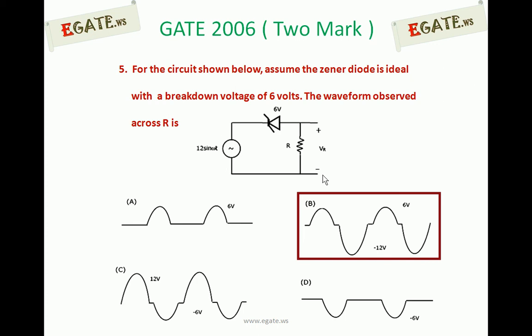We know the characteristics of a Zener diode. If the voltage across the Zener diode is positive, the Zener diode will be in forward bias. If the voltage across the Zener diode is less than zero and less than the breakdown voltage, it will be under reverse bias, acting as an open circuit. If the voltage under reverse bias is greater than the Zener breakdown voltage, it acts as a constant voltage source, maintaining 6 volts in this problem.